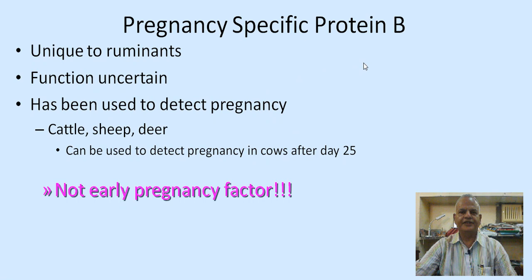The binucleate cells also secrete pregnancy-specific protein B, which is unique to ruminants. Its functions are uncertain but it has been used to detect pregnancy in cattle, sheep, and deer, and can be used to detect pregnancy in cows after day 25.